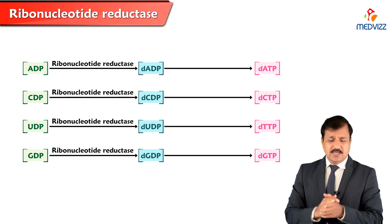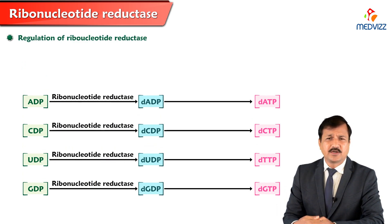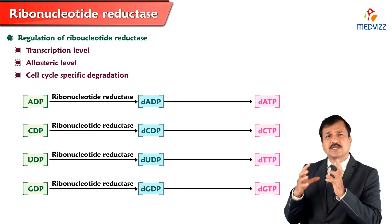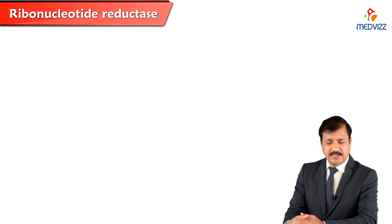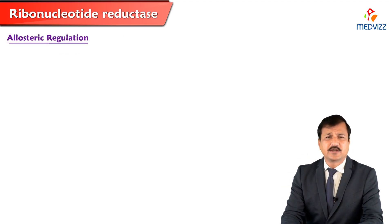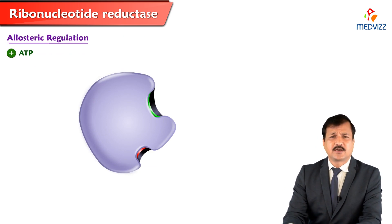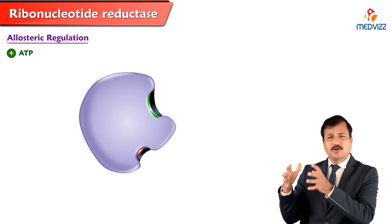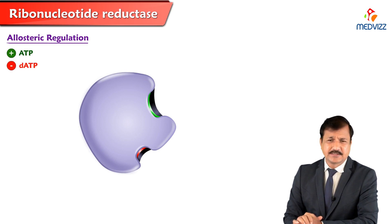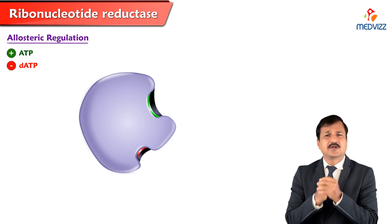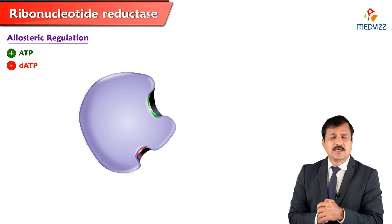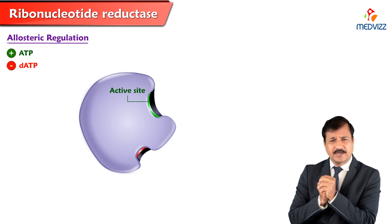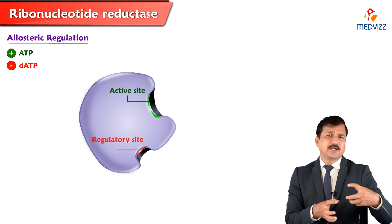The regulation of ribonucleotide reductase can happen at the transcriptional level, at the allosteric level, and also through cell-cycle-specific degradation of the protein. The positive allosteric modulator of ribonucleotide reductase is ATP, and the negative modulator is dATP. The enzyme has an active site where substrate binds and a regulatory site where regulatory molecules bind.